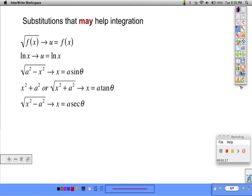Some substitutions that we can make to help integration: If we have the square root of a function, it's often a good idea to make a u substitution where u is equal to that function under the square root. If we have the square root of a squared minus x squared, we let x equal a sine theta. If we have x squared plus a squared or square root of x squared plus a squared, we let x equal a tangent theta. And if we have the square root of x squared minus a squared, we let x take on a secant theta.